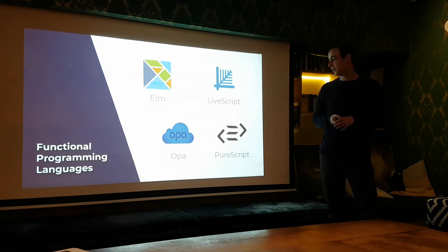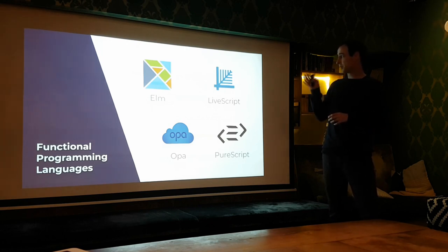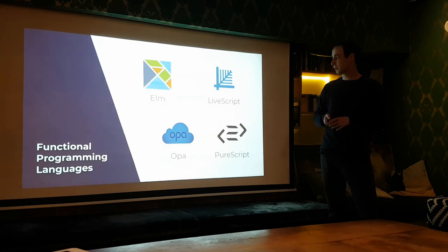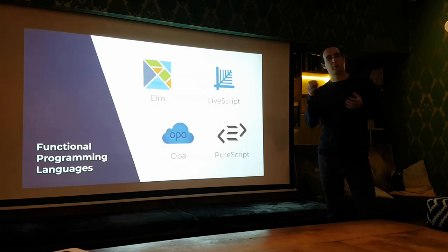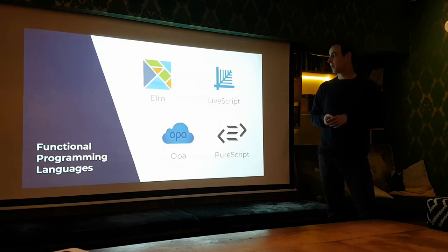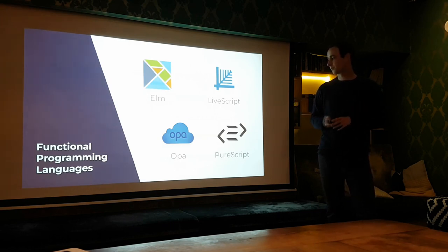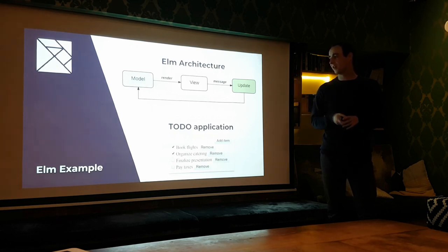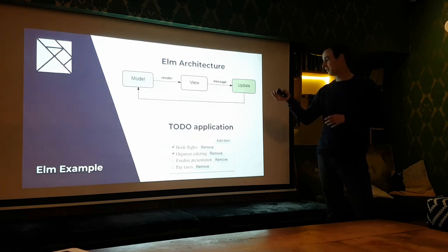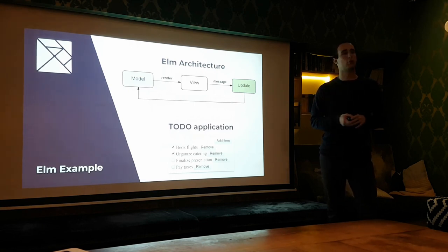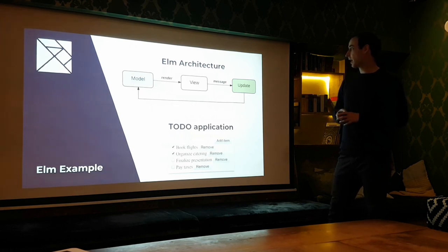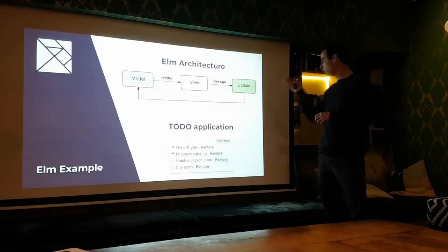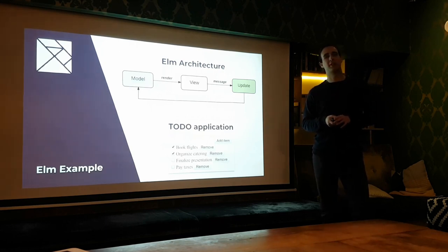Especially noteworthy is the programming language Elm, which not only allows compiling into JavaScript but also HTML and CSS for design. Elm allows you to build an entire frontend. That's why we take a look at an Elm example — a short and simple one just to show how a web frontend could be realized using functional programming. First, note the architecture of Elm.